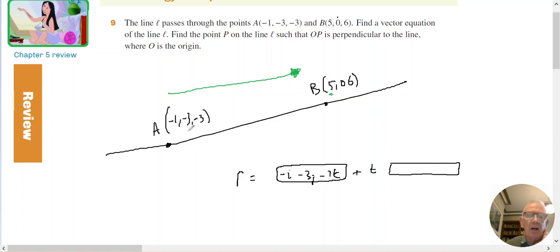So I'm going to do 5 minus minus 1 is 6I, 0 minus minus 3 plus 3J, and 6 minus minus 3 plus 9K. And since I'm just looking for a vector, I could divide all those by 3 and come up with 2I plus J plus 3K, and that will be 2I plus J plus 3K.